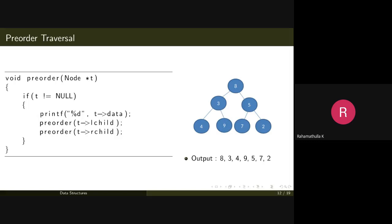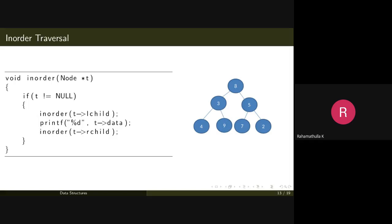Pre-order traversal is a simple procedure, but it involves recursive function calls internally. It calls the same function again and again with left and right children. Now for in-order traversal, the algorithm is similar but the left subtree is traversed first, then the root node is printed, then the right subtree is traversed.